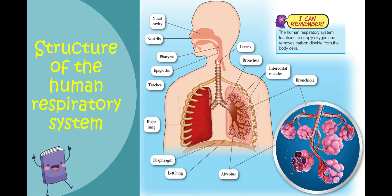In our lesson, you should be able to identify the parts of the human respiratory system. You should also be able to visualize the pathway of air entering the lungs through inhalation. Thank you for watching. See you again in our next lesson.